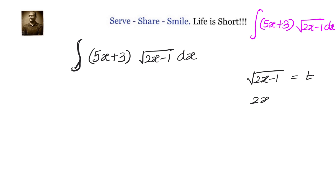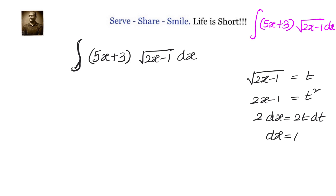We say that 2x minus 1 equals t squared. Differentiating both sides, we get 2dx equals 2t dt, which means dx equals t dt.